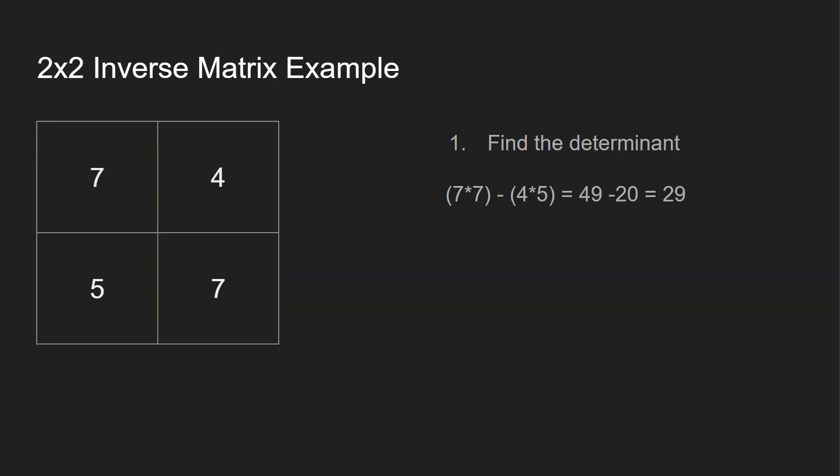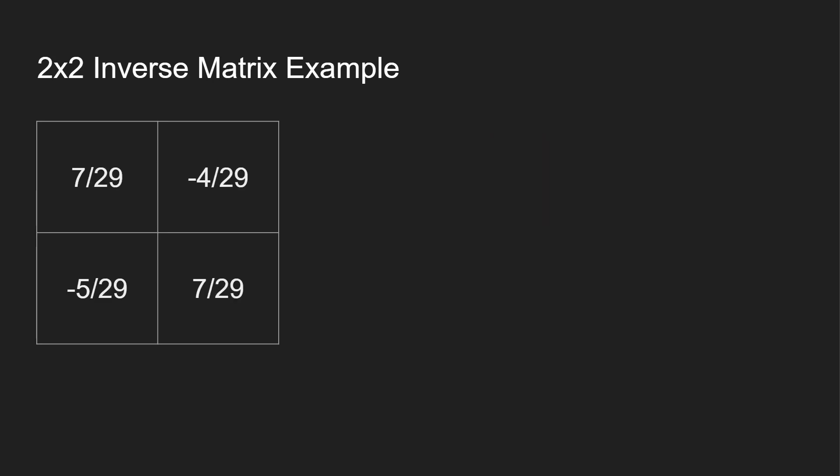So let's calculate a two by two inverse. Let's say we have the matrix [7, 4, 5, 7]. The first step you want to do is find the determinant — if it's zero, there's no inverse. So let's find that: we multiply seven by seven, and then minus four by five. We find the determinant value: 29.